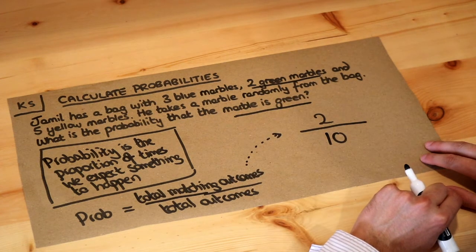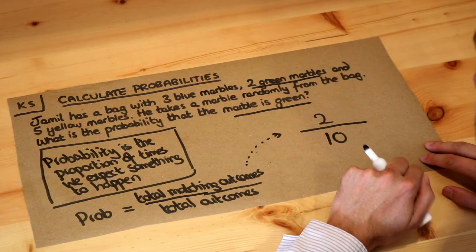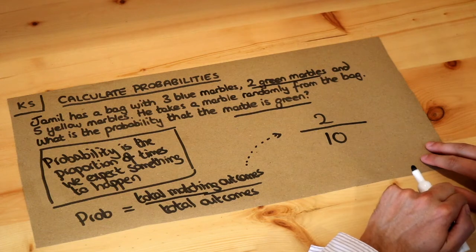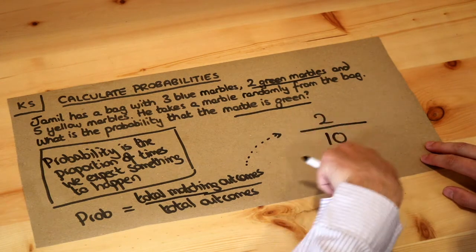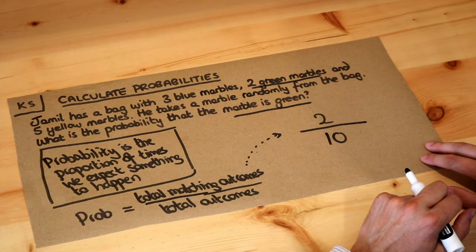If you think about it, what we're saying is that of the ten marbles, two of them are green. So that means that two-tenths of the marbles are green, and that's the proportion of the time—that's what probability means—that we expect to get a green marble.